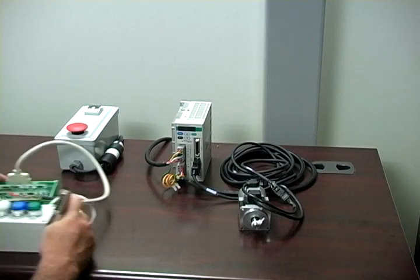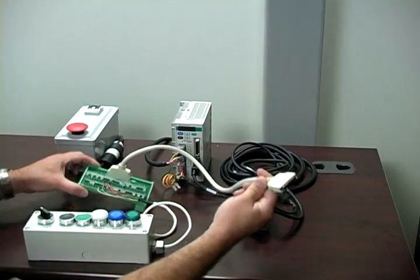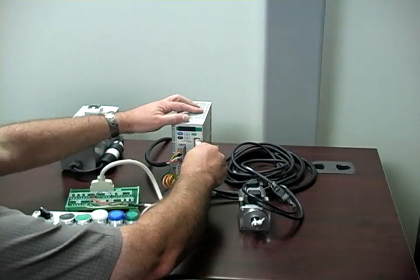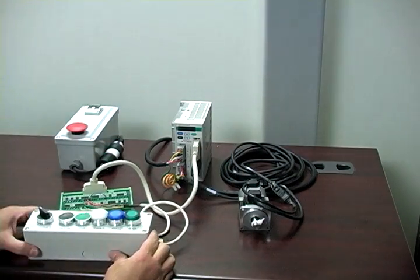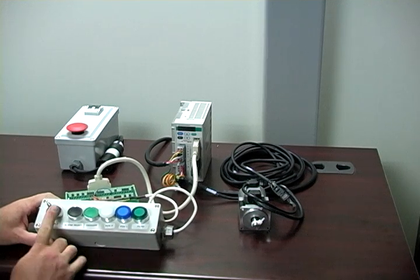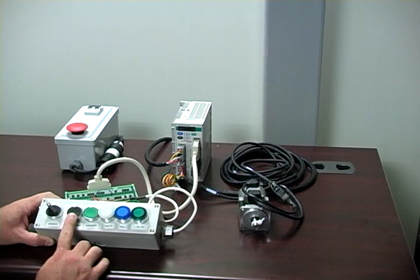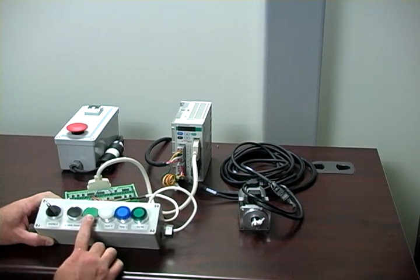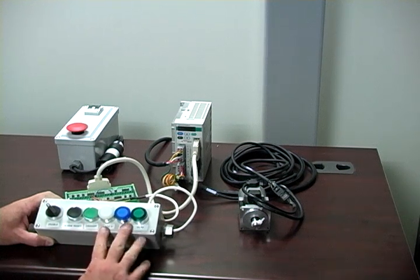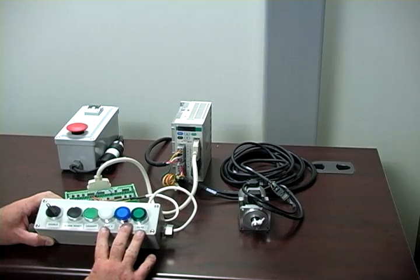With the power off, we'll add the zip link cable and terminal block I.O. breakout module to our setup and a push button box. In this example, I've wired a two position servo enable switch, a momentary fault reset button, a momentary trigger button, and three maintained position selection buttons.